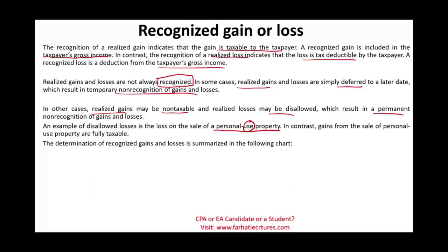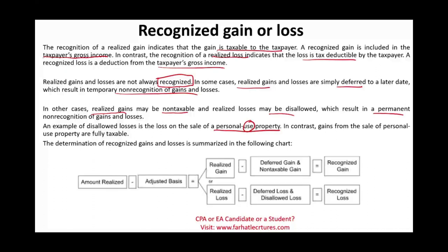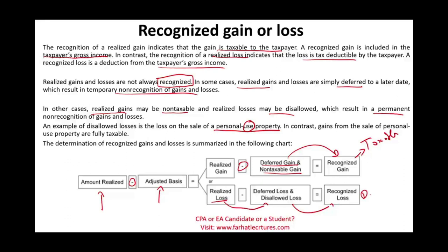The determination of recognized gain or loss is summarized in a chart. We start by computing the amount realized — the consideration received — then subtract the adjusted basis to arrive at either a realized gain or realized loss. If we have a gain, some may be deferred as non-taxable, and what's left is the recognized taxable portion. For a loss, some may be disallowed or deferred, and whatever remains is the deductible amount we report on the tax return.